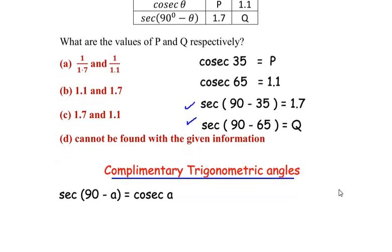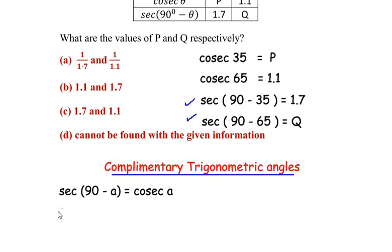So here let us write sec of 90 minus 35. So this should be equal to cosec of 35 from the complementary trigonometric angles.